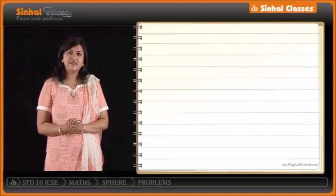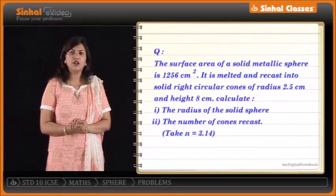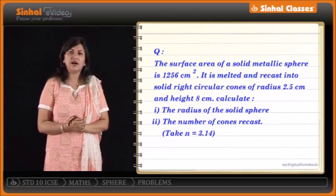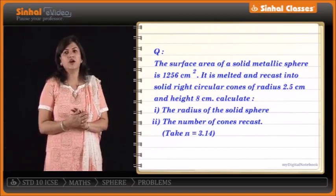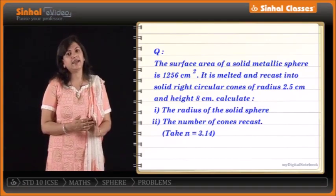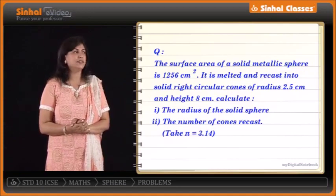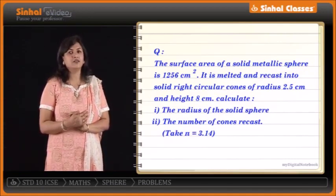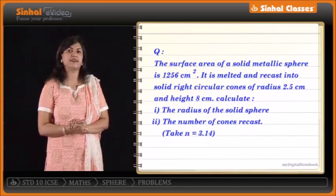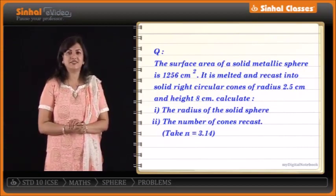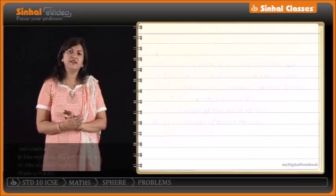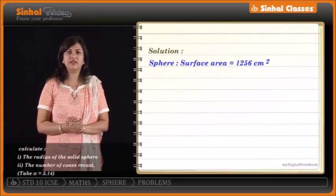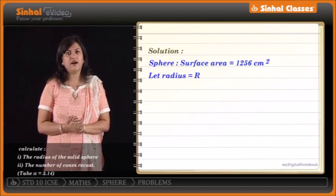The next problem: the surface area of a solid metallic sphere is 1256 cm². It is melted and recast into solid right circular cones of radius 2.5 cm and height 8 cm. Calculate the radius of the solid sphere and also the number of cones recast. We take π as 3.14. Let the sphere have radius R.